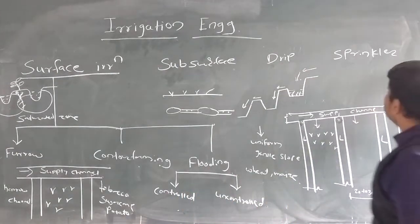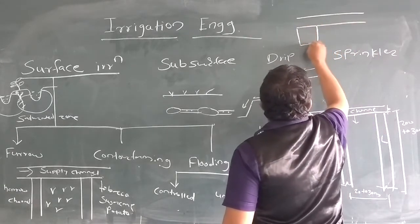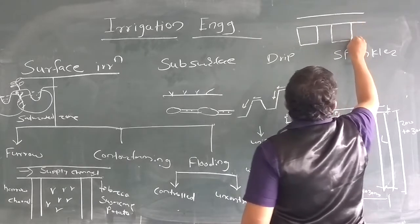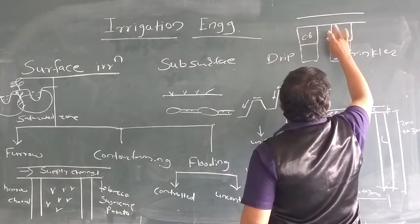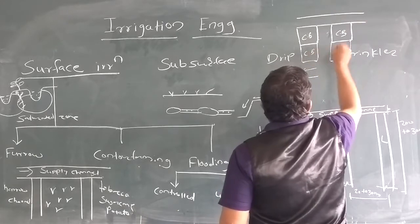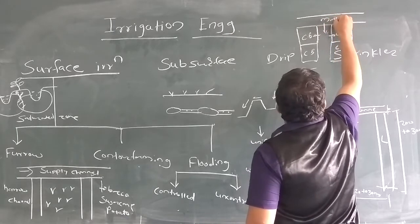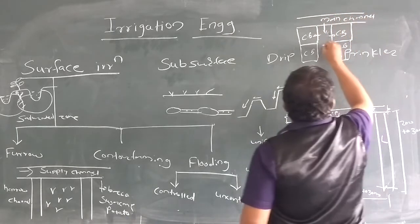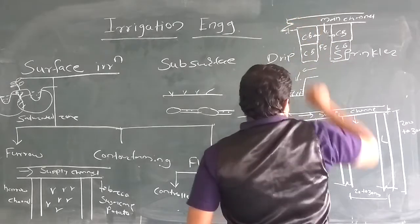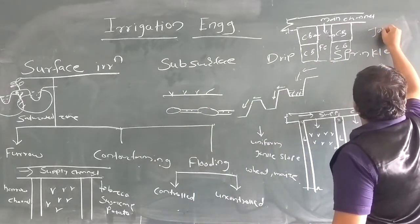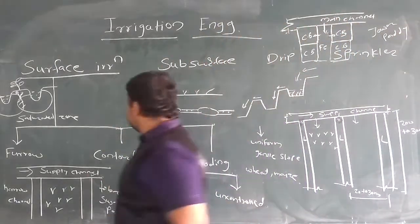Next is the check basin method. In this method, the land is divided into leveled plots known as check basins. Water is supplied from the main supply channel through field channels into these basins. Suitable crops for this method include jowar, paddy, and similar crops.